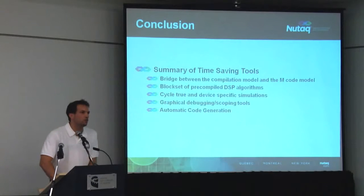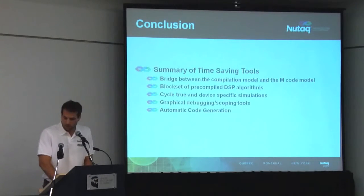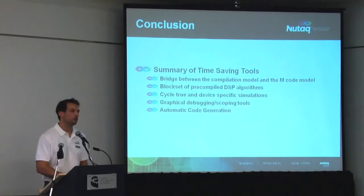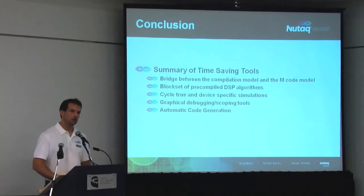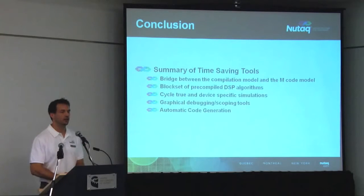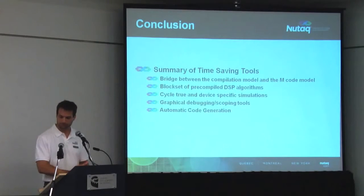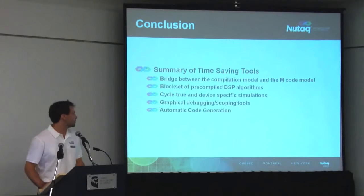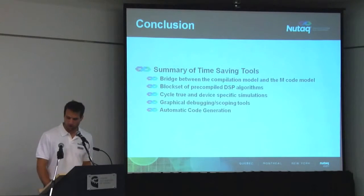To summarize the time-saving tools from our development approach: first is the bridge between the M-code proof-of-concept model and the System Generator HDL-generating model, which saves a lot of time during development. Second, the pre-compiled DSP algorithm block set from System Generator saves a lot of time — you don't want to hand-code an IFFT algorithm in HDL yourself, as it's very time-consuming. Third, the cycle-accurate simulation helps debug timing and latency constraints upfront. And the automatic code generation and graphical debugging tools make the whole process straightforward.